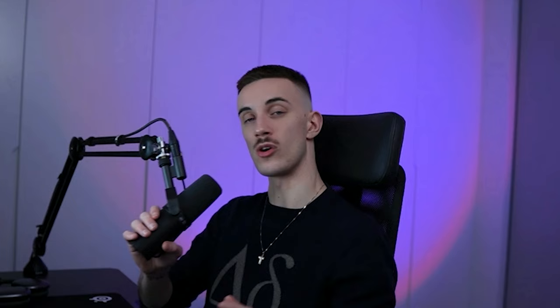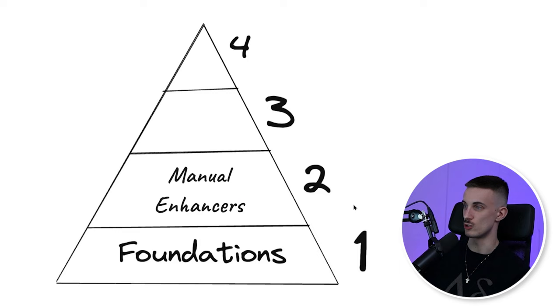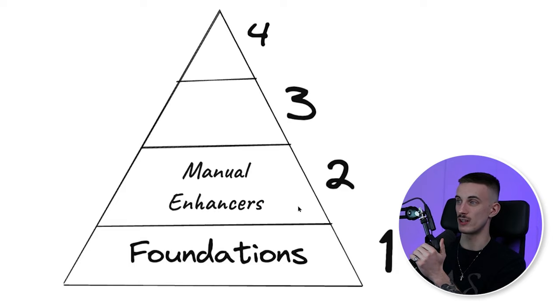Then comes step number two. This is when you are already running campaigns and already booking two, three, four calls a week — that's how you know your foundations are solid. Here you activate manual enhancers. You start focusing on inbox management: how fast are you replying to positive replies? This is when you start warm calling, focusing more on follow-ups for prospects that ghost you. Just by doing this, you can easily double the performance of your campaign. You can hire an SDR, but in the beginning you should do it yourself to actually learn it.